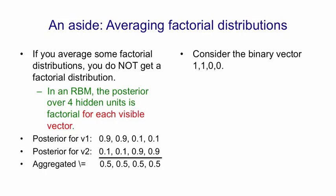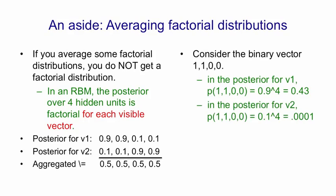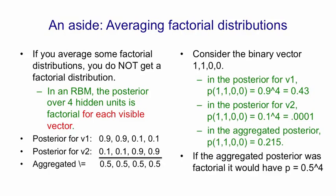To see that, consider the binary vector 1, 1, 0, 0 over the hidden units. In the posterior for V1, that has a probability of 0.9 to the 4th power, because it's 0.9 × 0.9 × (1−0.1) × (1−0.1), which is 0.43. In the posterior for V2, this vector is extremely unlikely — it has a probability of 1 in 10,000. If we average those two probabilities for that particular vector, we get a probability of 0.215. That's much bigger than the probability assigned to the vector 1, 1, 0, 0 by a factorial distribution with means of 0.5, which would be 0.5 to the power of 4, which is much smaller. So the point is that when you average two factorial posteriors, you get a mixture distribution that's not factorial.